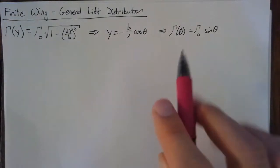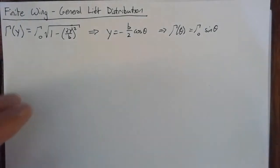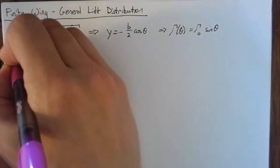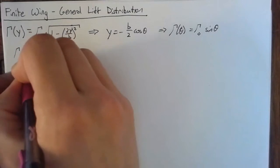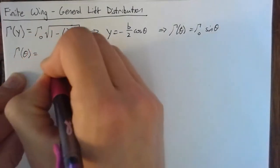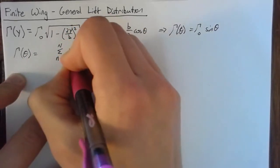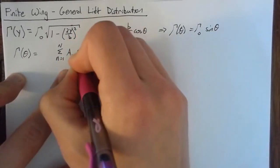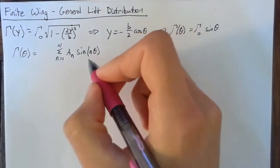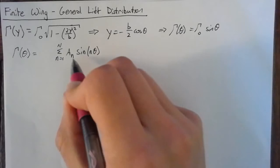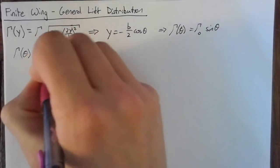What we'd like to do is use this equation as a framework to expand to a general lift distribution. We want to add similar terms to this sine theta term. So we're going to say that our gamma of theta is going to be a sum from n equals 1 to capital N of some constant An times a sine term, not of theta, but of n theta. So this is just a finite Fourier series. And in order to get our units correct, we're going to multiply all of this by 2b times V infinity.